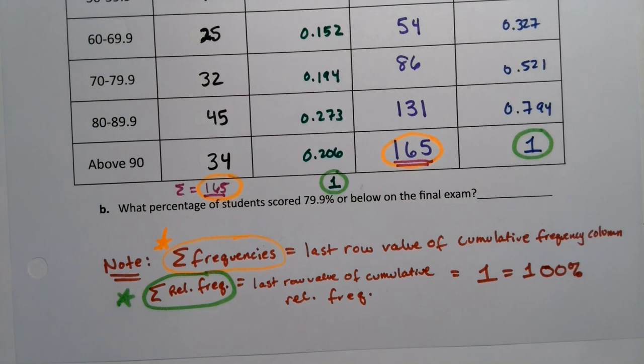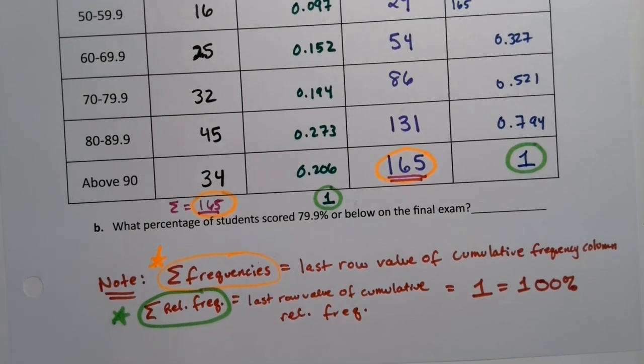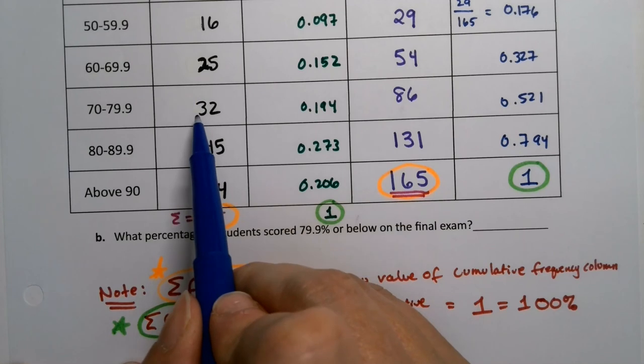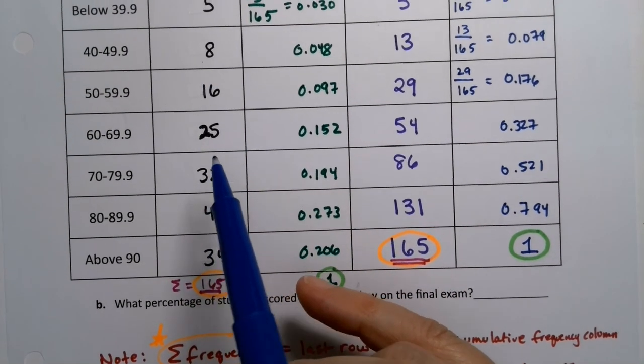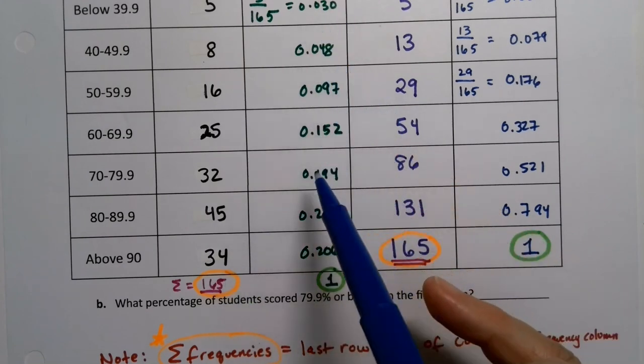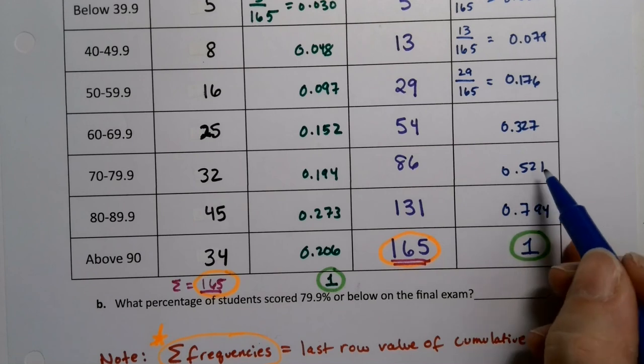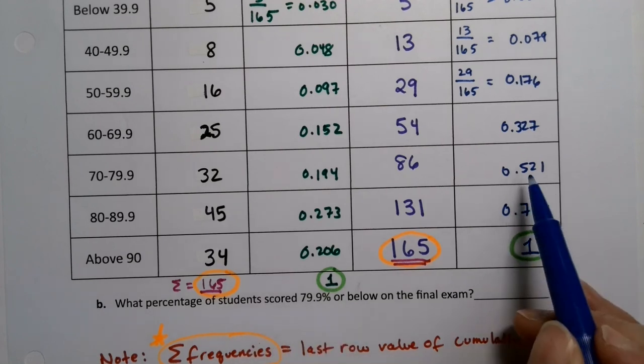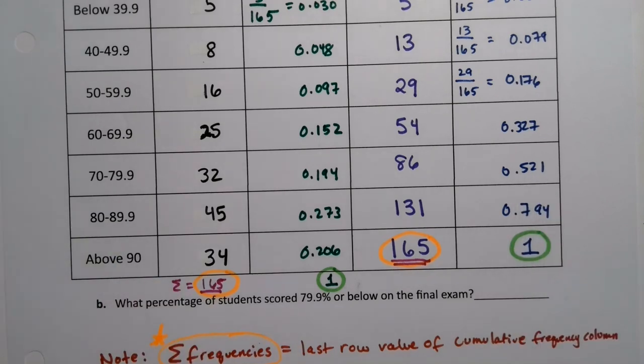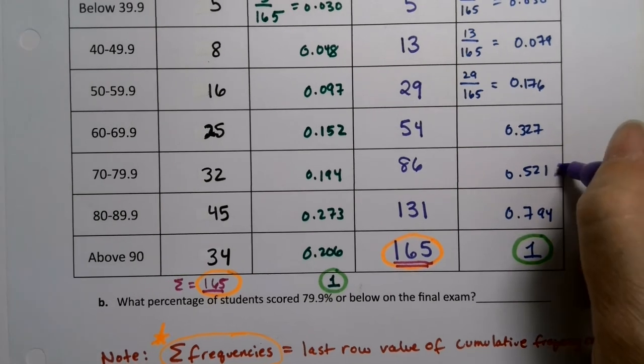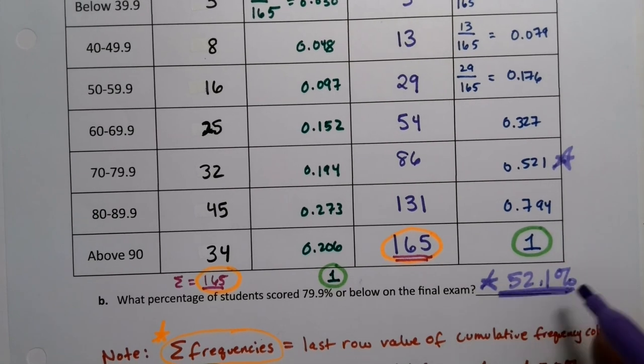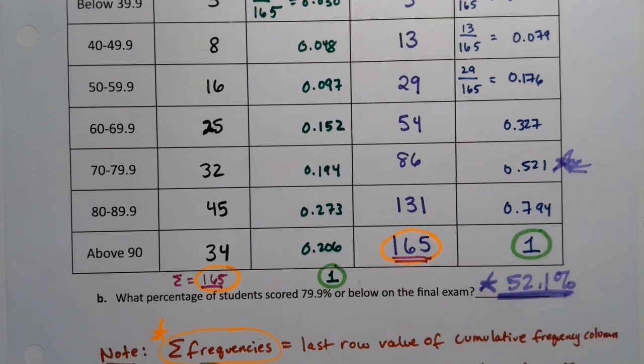Now, I said that this was useful for percentiles. And I wanted to show you what I meant. So what percentage of students scored less than 79.9? So 79.9% or below on that final. So if you were going to do that here, you'd have to add up all of them here and then divide by 165. Or you could add up all the decimals. But the beautiful thing is it's already added for you right here. See that value? So what percentage of students scored 79.9 or below? It's right there. It's 52.1%. It's given to you in that cumulative relative frequency. So this answer is right here.